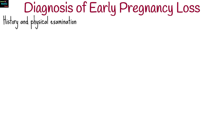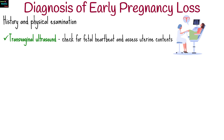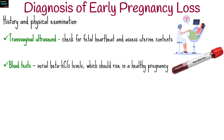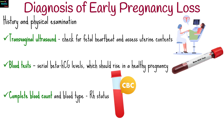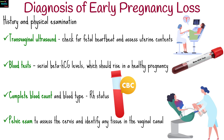Diagnosis involves several steps. First, a thorough history and physical examination. Then, a transvaginal ultrasound is used to check for fetal heartbeat and assess uterine contents. Blood tests are also important, especially serial beta-HCG levels, which should rise in a healthy pregnancy. A complete blood count and blood type, including RH status, are usually done. A pelvic exam may also be necessary to assess the cervix and identify any tissue in the vaginal canal.